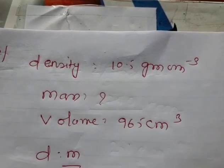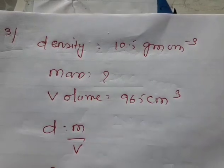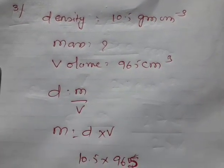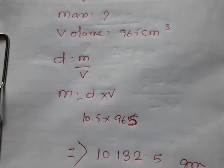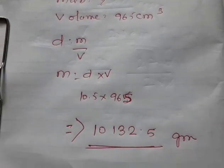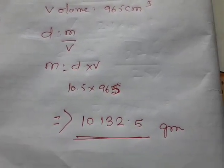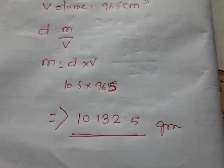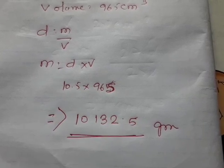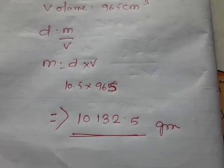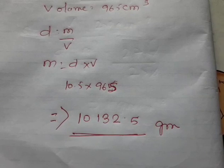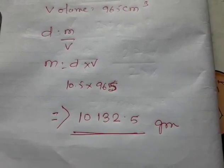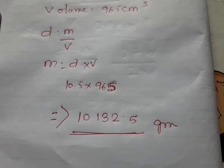Numerical number 3: density is equal to 10.5 grams per centimeter cube. Mass we need to calculate. Volume is equal to 965 centimeter cube. Density equals mass by volume, so mass equals D into V. Density is 10.5, volume is 965. If you multiply, you will get the answer as 10,132.5. Don't worry about the answer that is in the book. Leave the answer this way. Nobody will deduct even half of your marks.